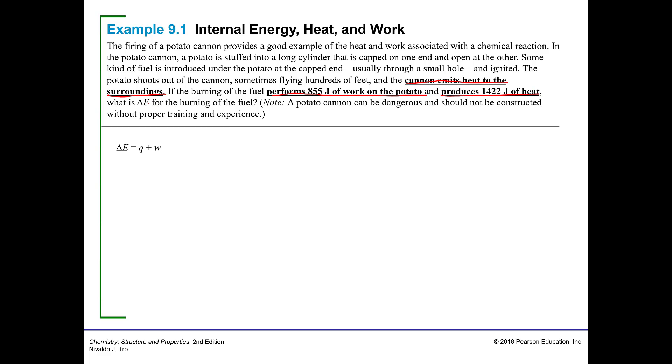If the burning of the fuel performs 855 joules of work on the potato and produces 1422 joules of heat, what is the delta E? So I have 855 joules, and that's on the potato. And I produce 1422 joules of heat, and I produce those joules of heat where? To the surroundings. Because it says it emits heat to the surroundings.